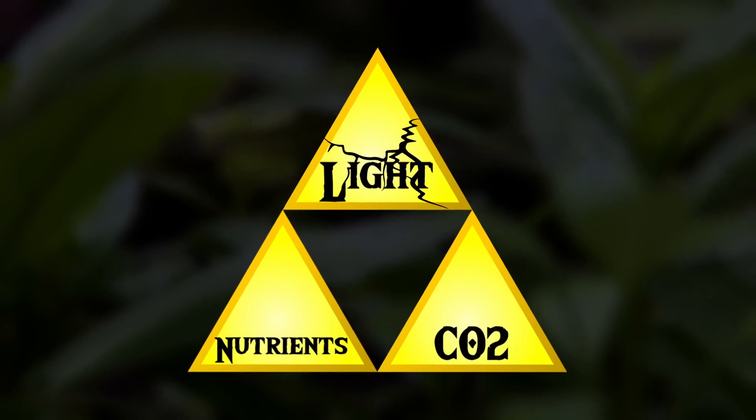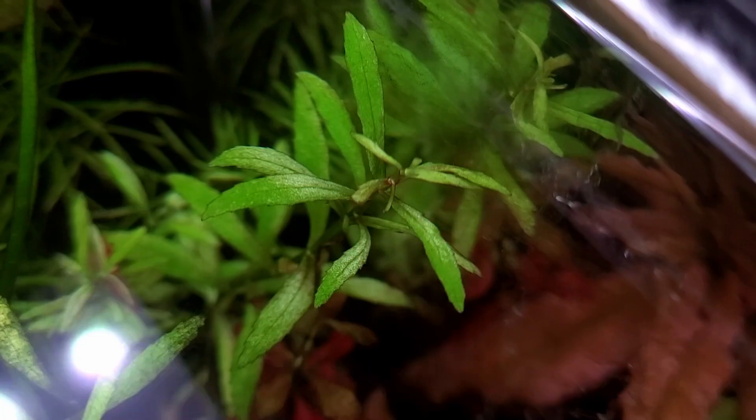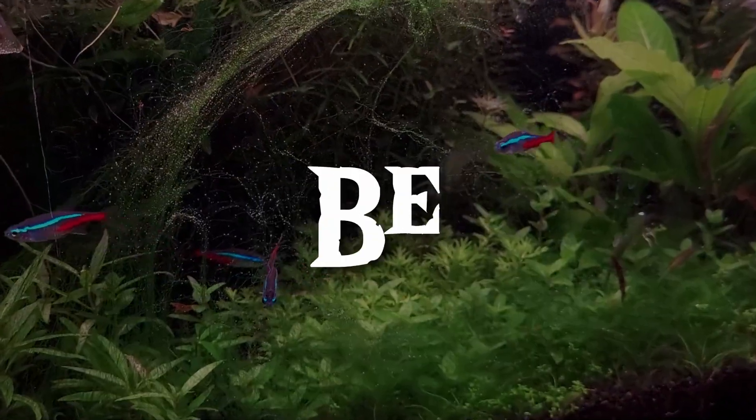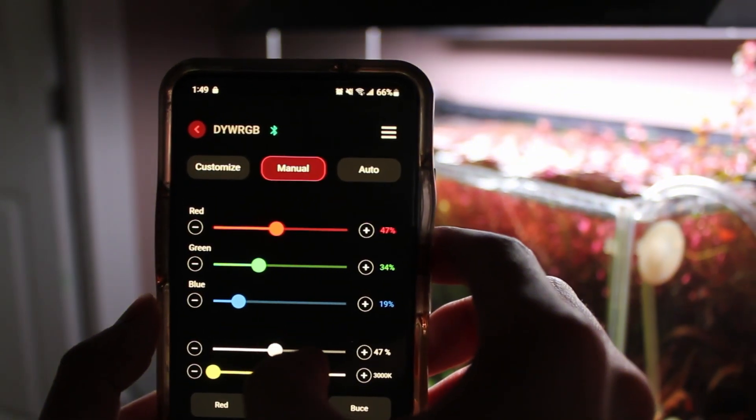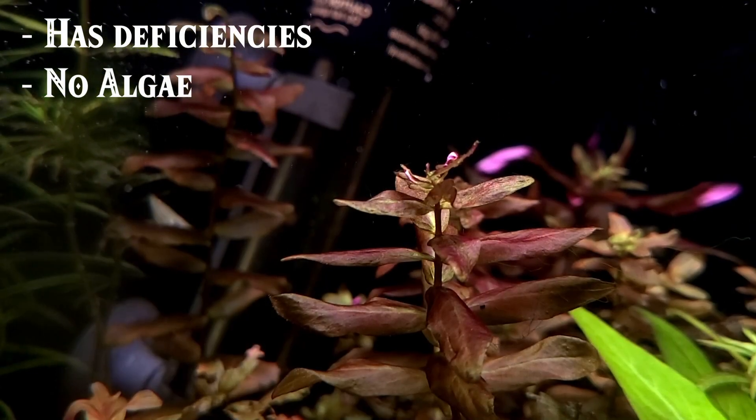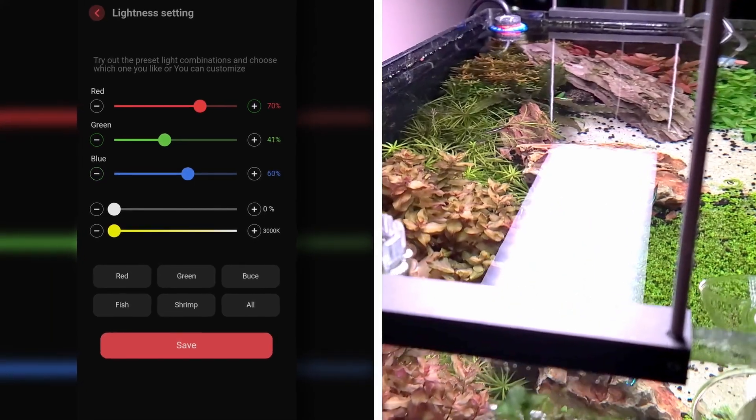More often, it's light that casts the most significant roadblocks in our journey. If your plants show deficiencies and there's an abundance presence of algae, your light may be too intense. Consider dimming its power or shortening its duration. But if there are plant deficiencies and zero to low amounts of algae, then let there be more light.